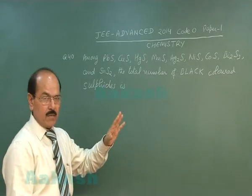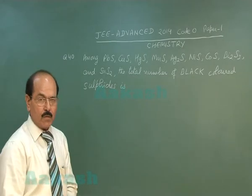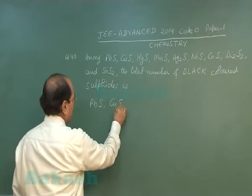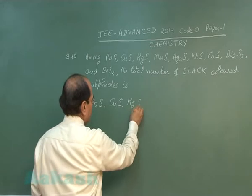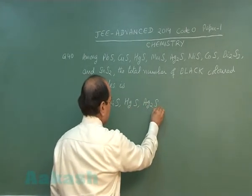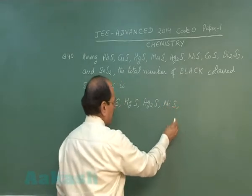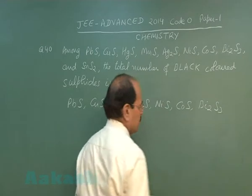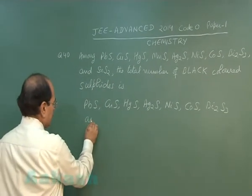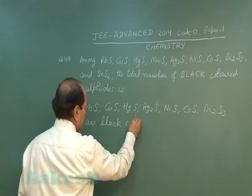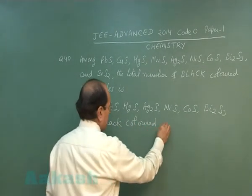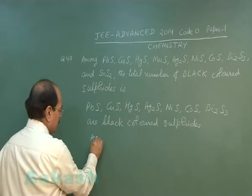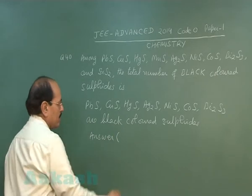MnS is buff colored and SnS2 is yellow colored. So the black colored sulfides are PbS, CuS, HgS, Ag2S, NiS, CoS, and Bi2S3. The correct answer to this question is 7.